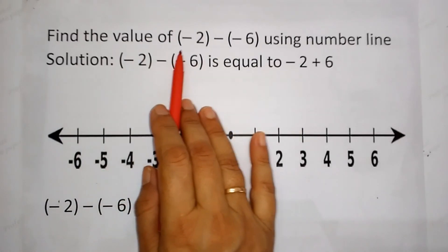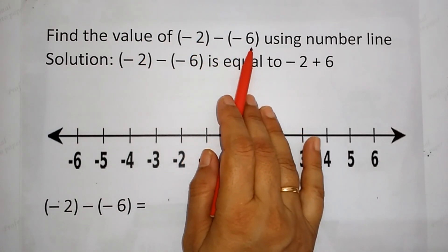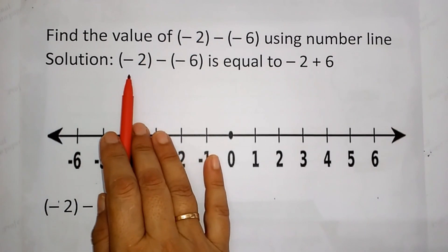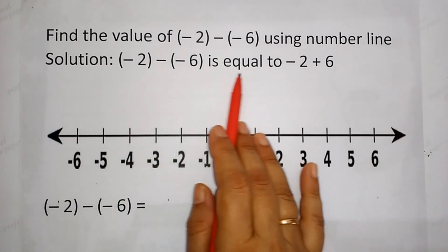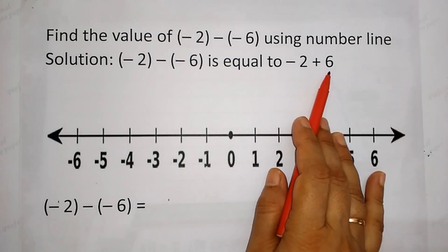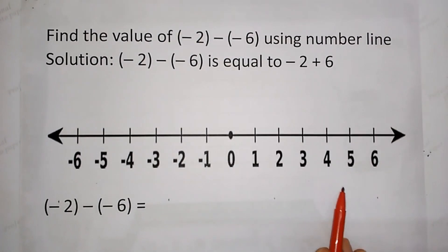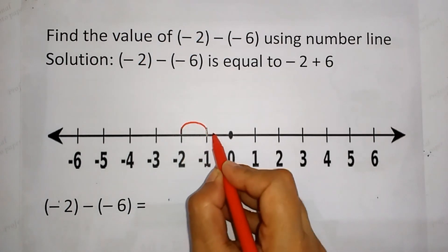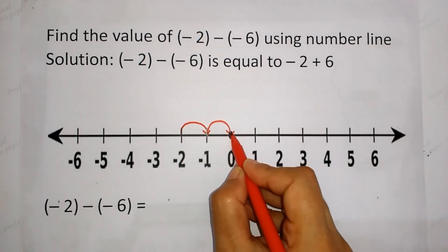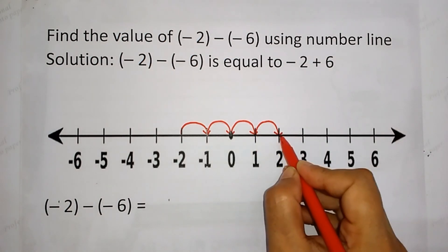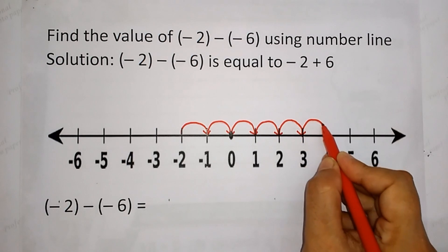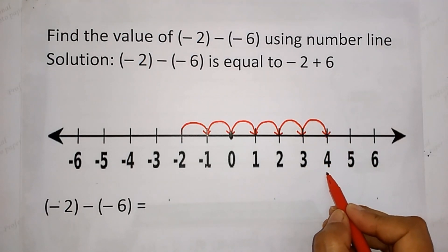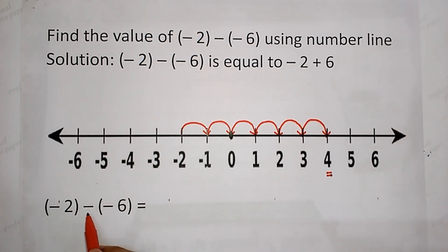Find the value of minus 2 minus of minus 6 using a number line. Minus 2 minus minus 6 is equal to minus 2 plus 6. First, you are going to draw a number line. From minus 2, we move 6 steps towards the right, counting 1, 2, 3, 4, 5, and 6. So we reach 4. Minus 2 minus of minus 6 is equal to 4.